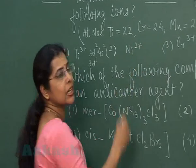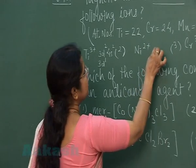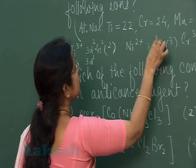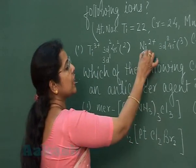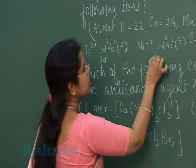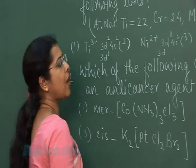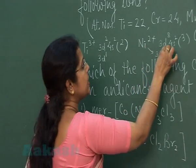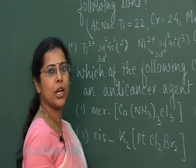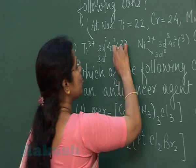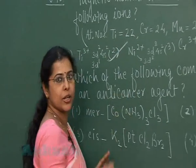Atomic number of nickel is 28. So its electronic configuration is 3d8 4s2. Since nickel is present in +2 state, the configuration of the ion is 3d8. 3d8 means two unpaired electrons are present. So the correct option is the second one.